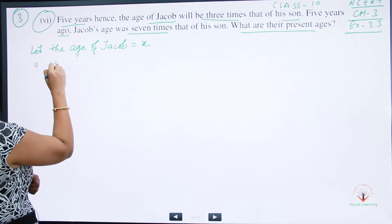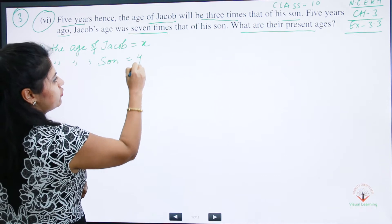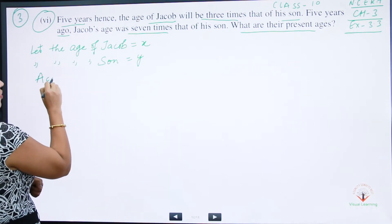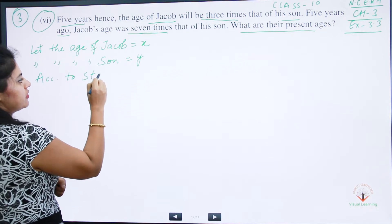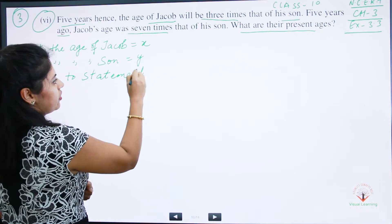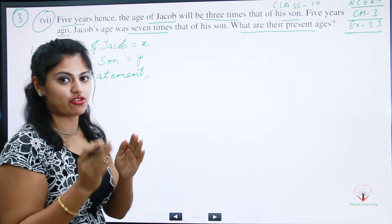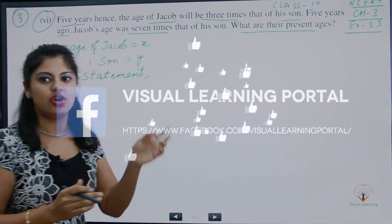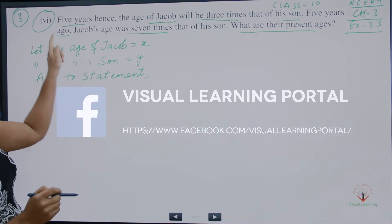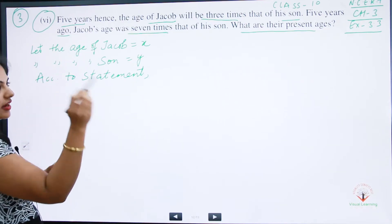Let the age of Jacob be equal to x, and let the age of the son be equal to y. According to the statements, we will write the equations. If you don't know the substitution method, make sure you check my previous videos.